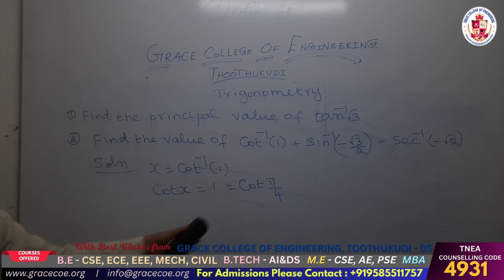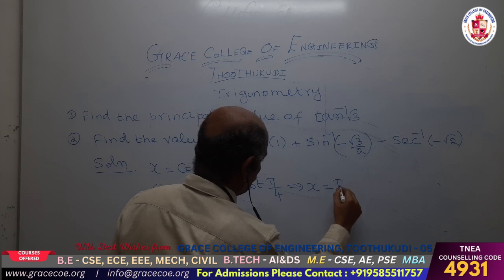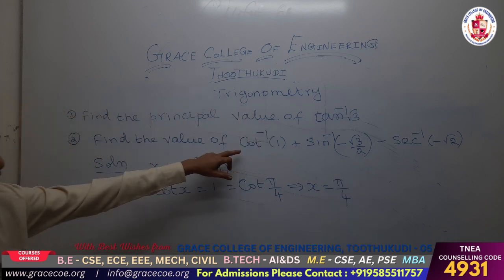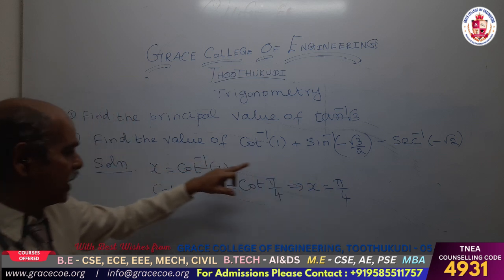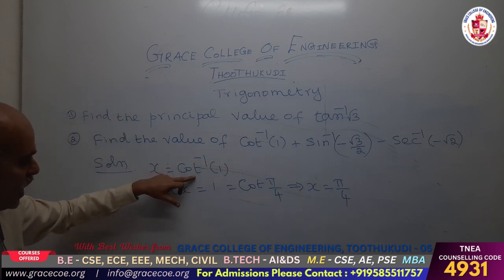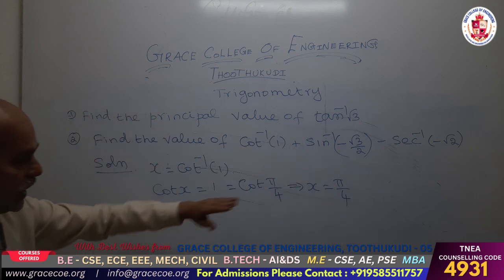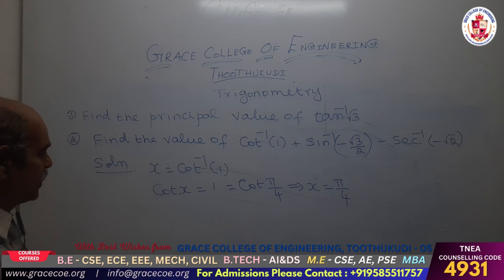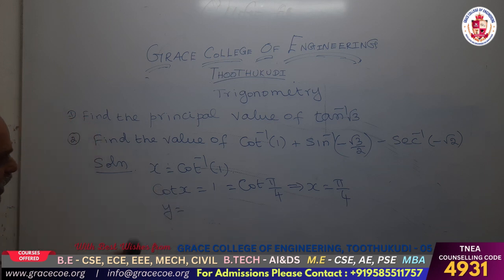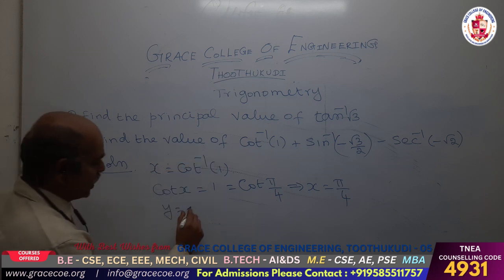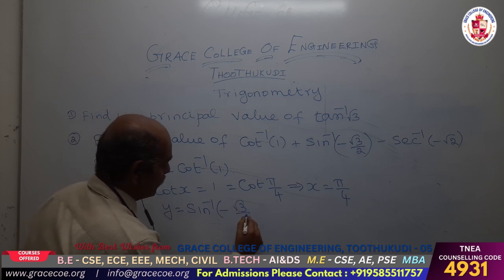Therefore here x is equal to pi by 4. So the first value — cot inverse of 1 — is equal to pi by 4. The second value is equal to y, where y is equal to sin inverse of minus root 3 by 2.